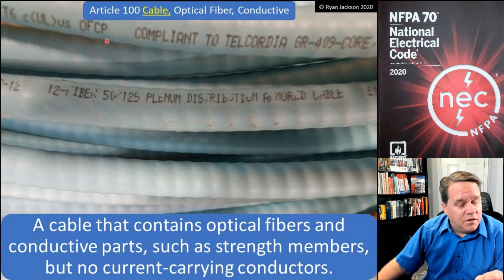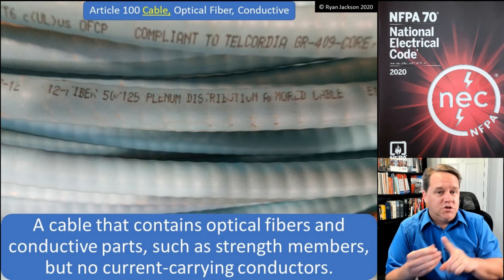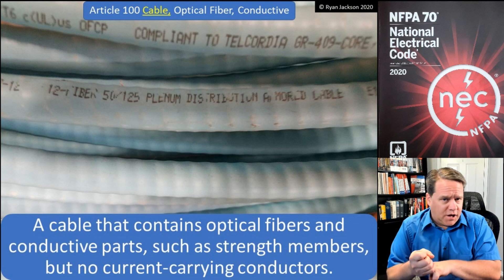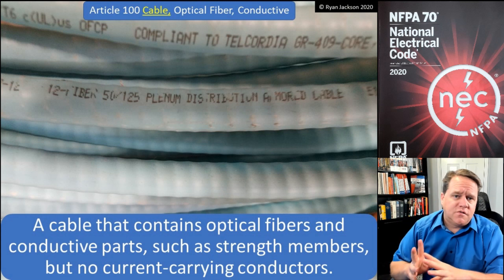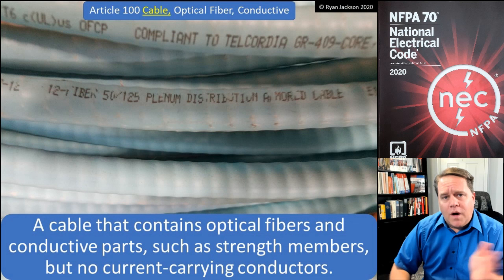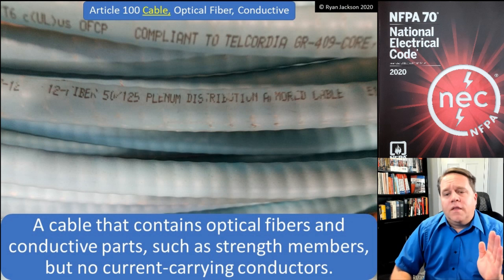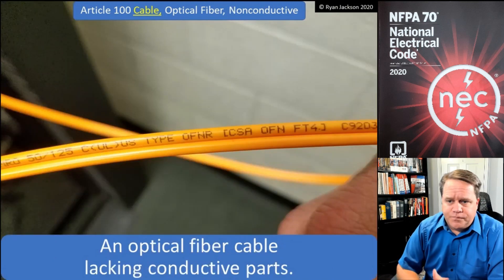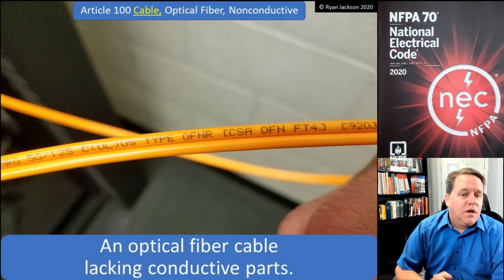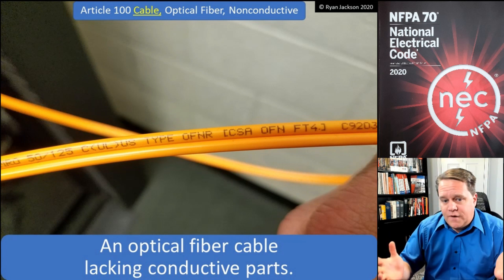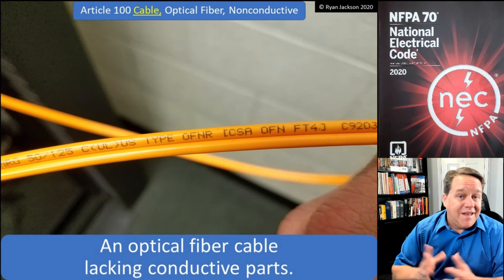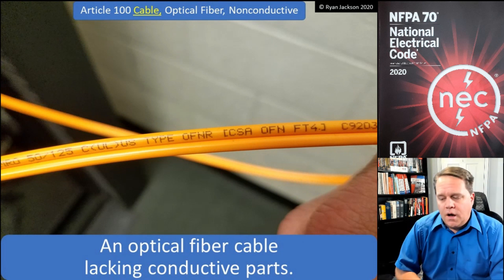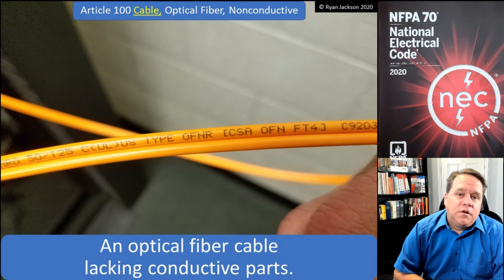The last letter — whether it's G for general, R for riser, or P for plenum — tells us where we can install it. OF stands for optical fiber, and then you have conductive, non-conductive, and composite as we discussed. Non-conductive optical fiber cable is just optical fiber with no conductive parts. OFNR is the most common, or OFN, and then R or P depending on where you need to install it.